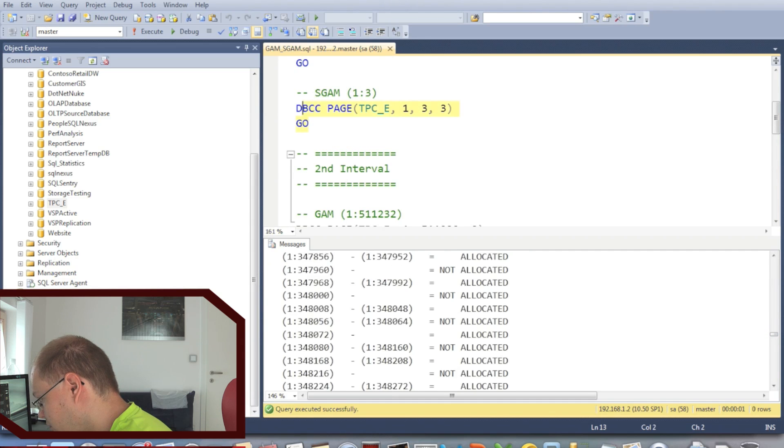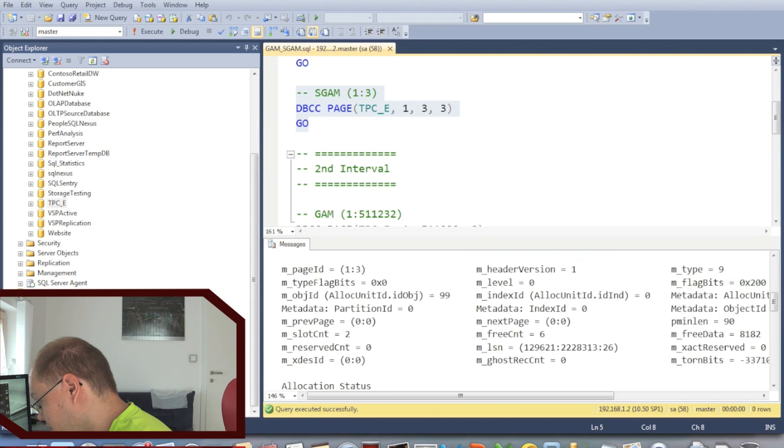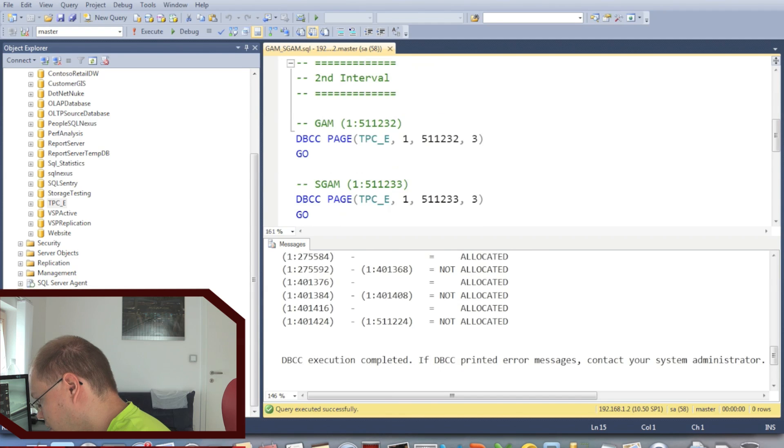Next page is the SGAM page, which is always the fourth page at the beginning of our data file. So again, we have our page header, 96 bytes, and then again we have the extent allocation bitmap mask of the SGAM page. So in that case, pages 0 to 408 are not allocated, pages 416 to 432 are allocated, pages 440 to 447 are not allocated.